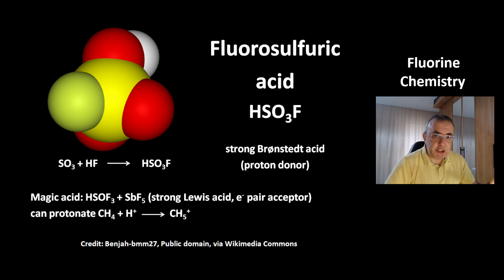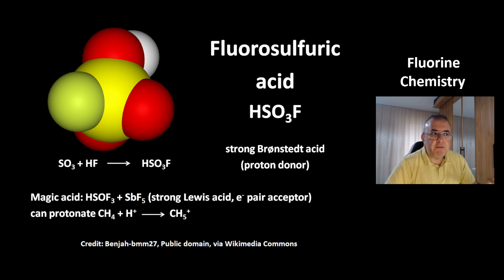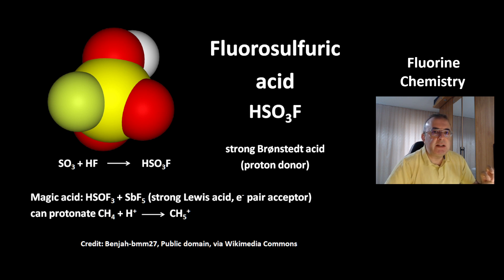Then there's magic acid — that's a mixture of fluorosulfuric acid with antimony pentafluoride. Antimony pentafluoride is a strong Lewis acid; Lewis acids are electron pair acceptors. This magic acid is so strong that it can even protonate methane, which gives you the cation CH5+.